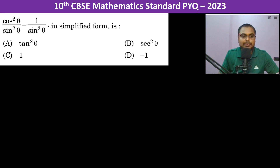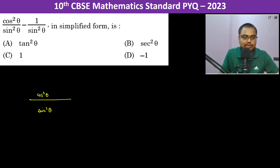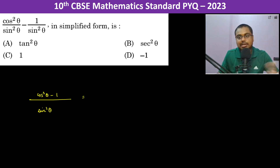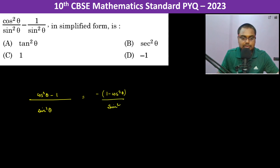We have to do this in simplified form. Taking the denominator as a constant, let us take it as sine squared theta. So this becomes cos squared theta minus one. Now, 1 minus cos squared theta is sine squared theta, so we can write minus of (1 minus cos squared theta) divided by sine squared theta.